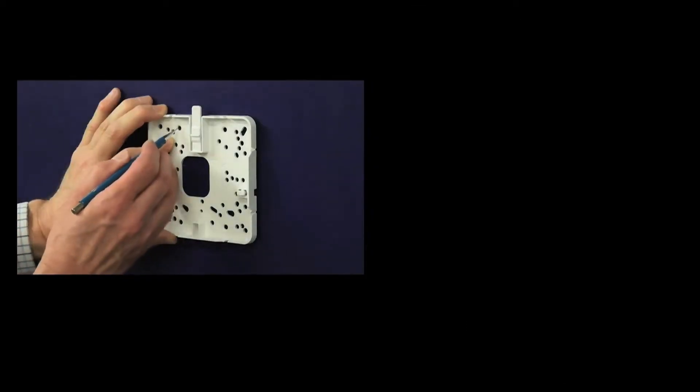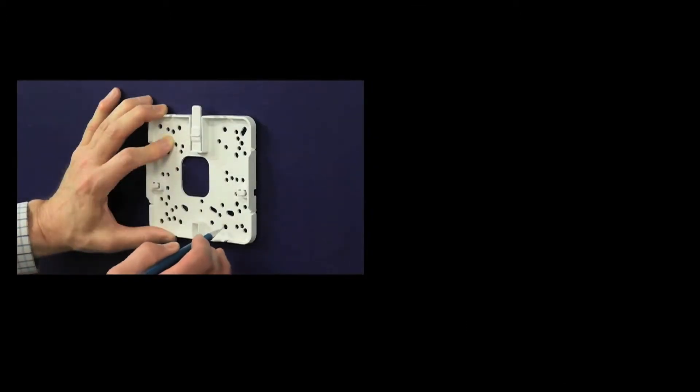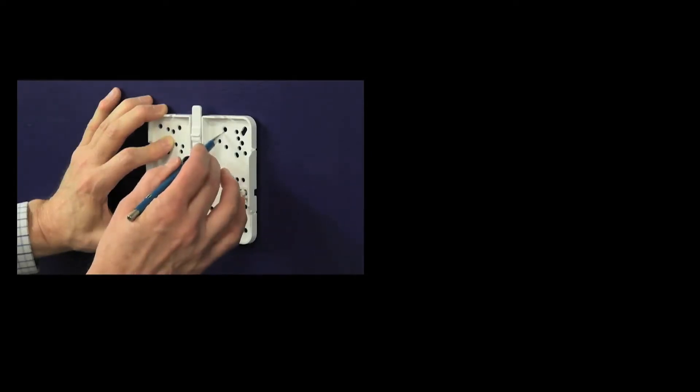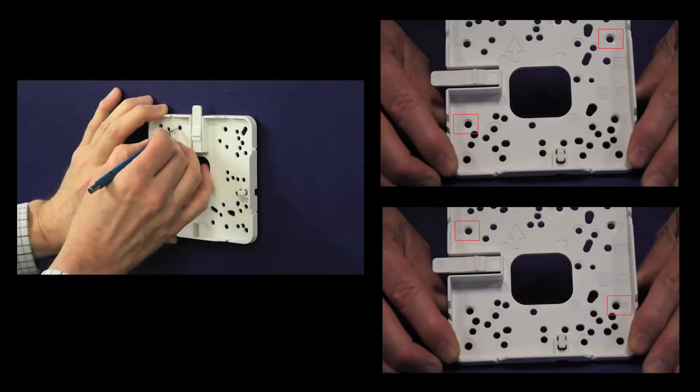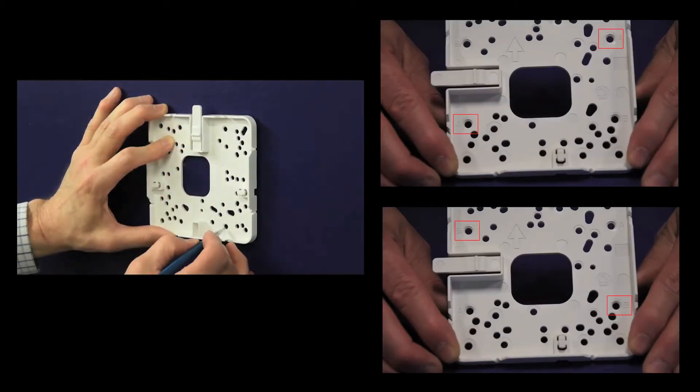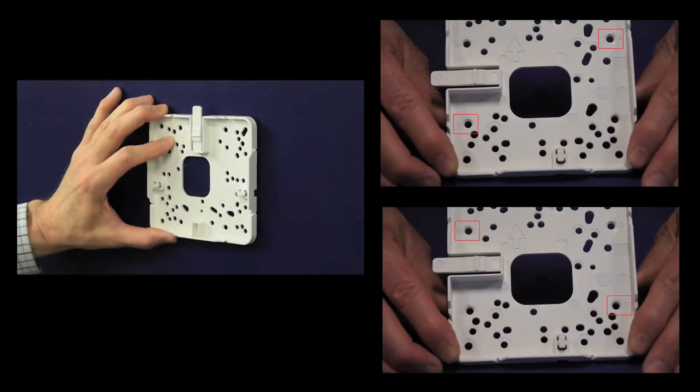For a wall or solid surface attachment, use the bracket as a template and select the two A or B marked holes and mark their centers after determining the proper AP orientation. The two used should be on opposite sides of the large center cutout.